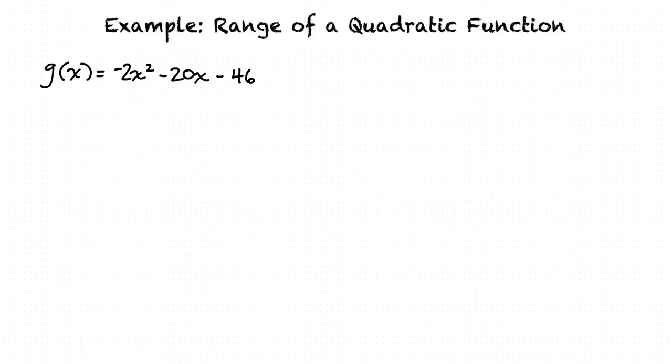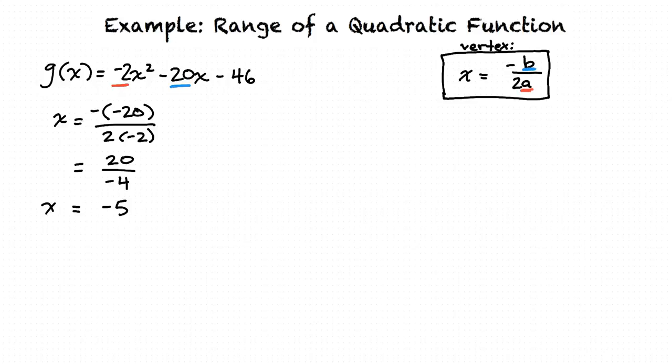To start, we will find the vertex, which we know will be one end of the range. In the vertex formula, x equals negative b over 2a, substitute negative 2 for a, and negative 20 for b. After doing this, we find the x value of the vertex to be negative 5.